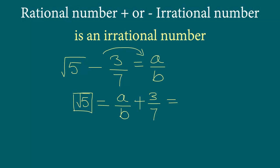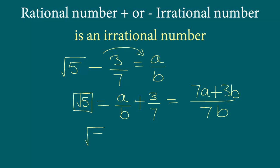Now if we simplify, we will get (7a plus 3b) over 7b — the LCM will be 7b and then it will be 7a plus 3b. So what we have here is that square root 5 equals this expression, where a and b are integers.